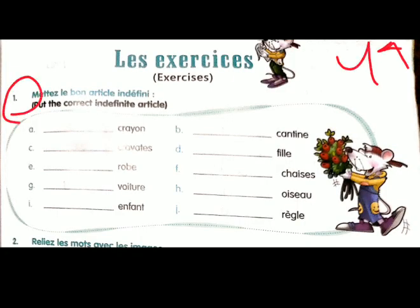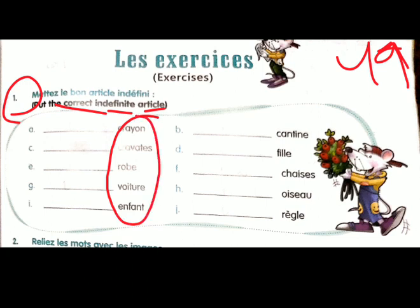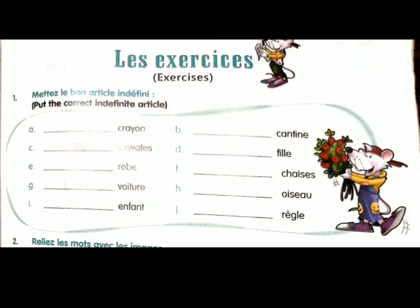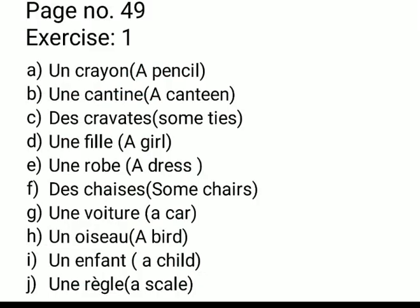Here is exercise number one on page number 49. You have to put the correct indefinite article. The objects are given and you have to choose from three options: UN, UNE, and DES. Here are the answers.